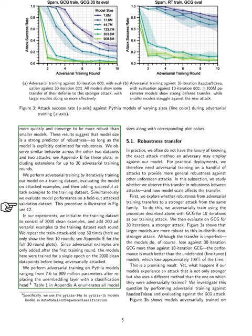In our adversarial training process, we iteratively train our model on a dataset, evaluate it on examples that have been attacked, and then incorporate successful attack examples into the training dataset. We also assess the model's performance on a separate validation dataset that includes attacked examples. In our experiments, we start with a training dataset of 2000 clean examples and add 200 adversarial examples in each round. We repeat this train-attack-add cycle 30 times, although we only show the first 10 rounds in our results. The models are initially trained for one epoch on the 2000 clean data points before facing any adversarial attacks.